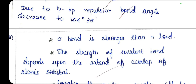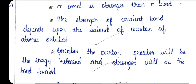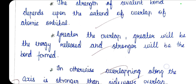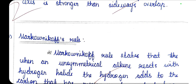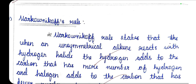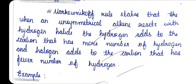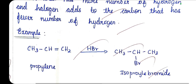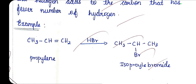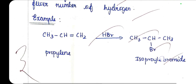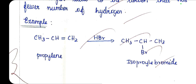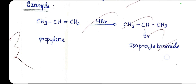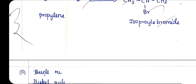Sigma bond is stronger than pi bond. Markovnikov's rule: unsymmetrical alkenes undergo addition following Markovnikov's rule. When propene reacts with HBr, it gives isopropyl bromide (isopropyl chloride).